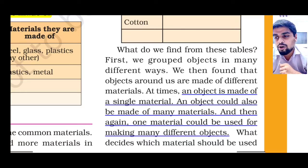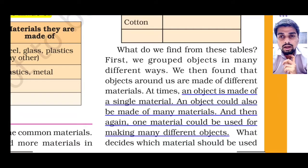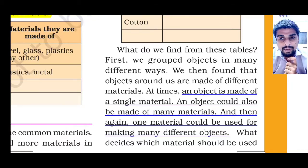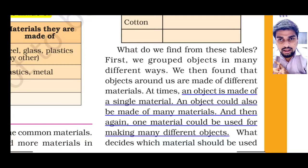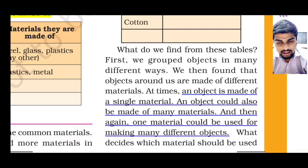Similarly, if I talk about paper, we can use paper as a material to make notebook, textbook, cardboards, playing cards, newspaper, and currency notes. Paper is used to make this many objects. As I said, one material can be used to make many objects, and one object can be made using many materials.